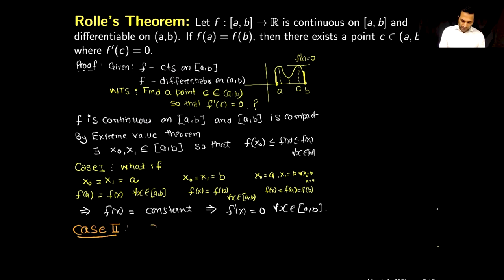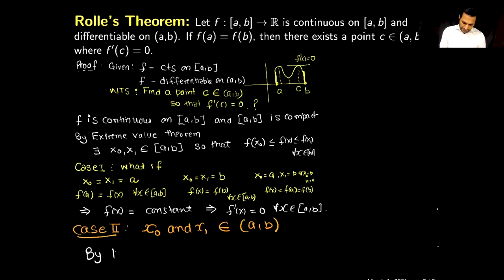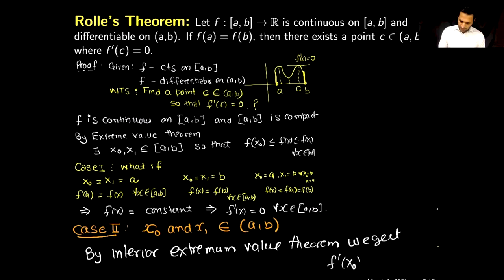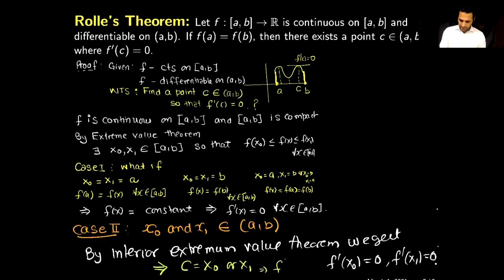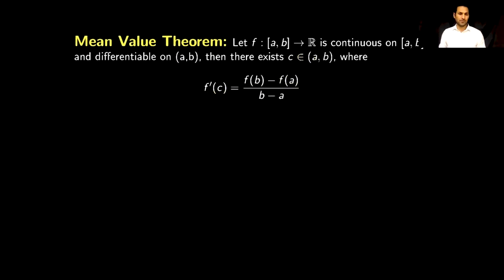In Case 2, we consider when x₀ and x₁ belong to the open interval (a, b) — they do not occur at the endpoints. In this case I can use the Interior Extremum Value Theorem, which we proved in a previous video. Therefore, by the Interior Extremum Value Theorem, f'(x₀) = 0 and f'(x₁) = 0. So I can choose c equal to either x₀ or x₁, and we have f'(c) = 0, which is what we wanted to prove. This completes the proof of Rolle's Theorem.